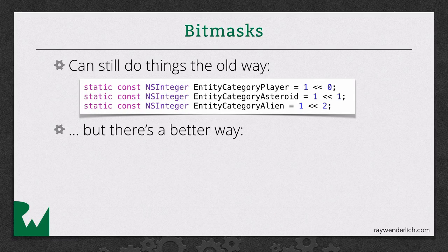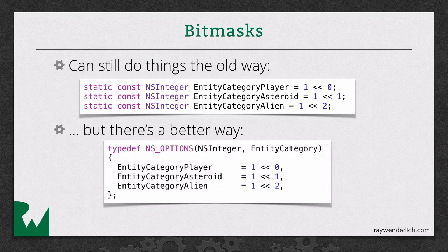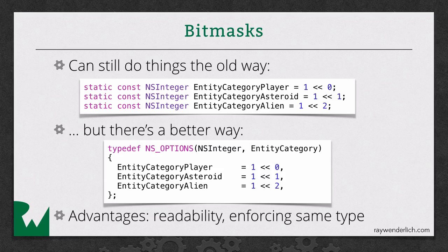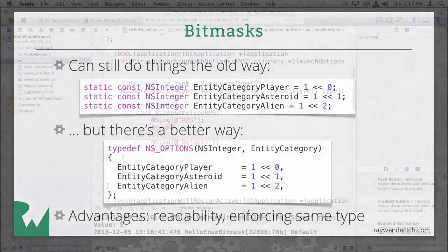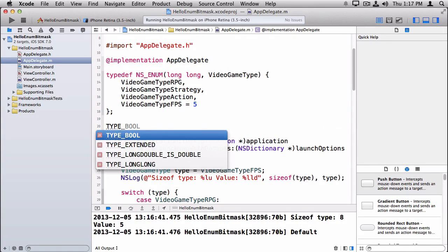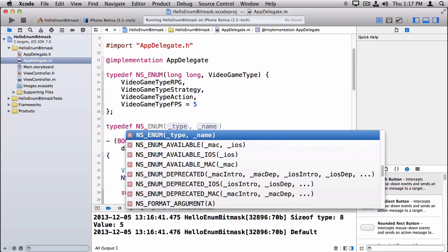We're not really going to cover the old C way because there's a better way yet again — there's another macro set up by Apple called NS_OPTIONS. You specify the type here, give it a name, and then just list them out as you would before. The benefit is it reads a lot better because everything is together in one block, and it forces them all to be the same type, avoiding mistakes where you might accidentally mix NSInteger with a plain int or long long.